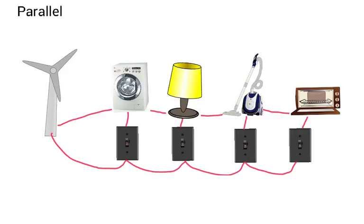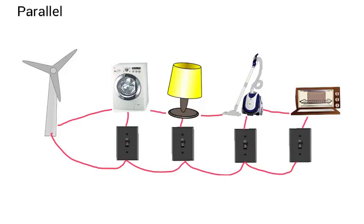Now parallel circuits are much more useful than series circuits because with a parallel circuit I've got more than one loop. So I've got my power source here again, the wind turbine. And the electricity can go through here, go around this way here. So I can choose what device is on — I can choose if the washing machine is on, if the light bulb is on, if the vacuum cleaner is on or if the microwave is on. And I've got different switches for my different devices.